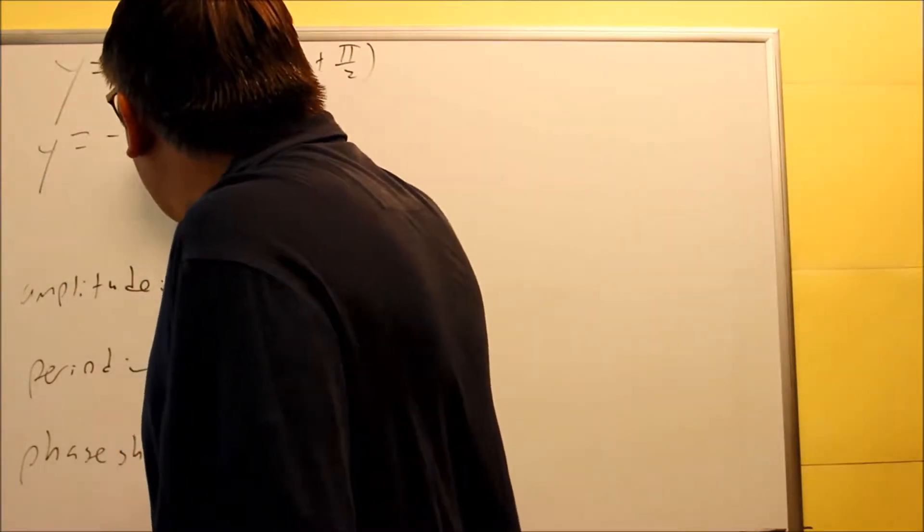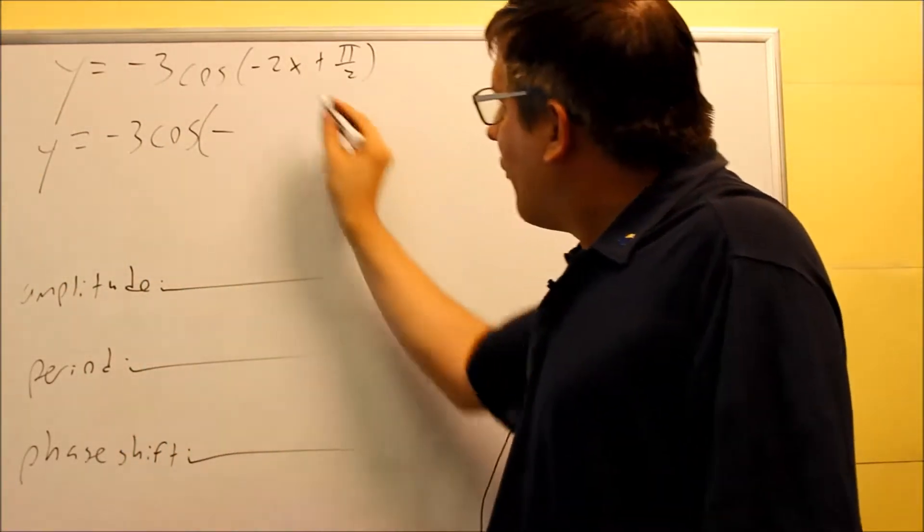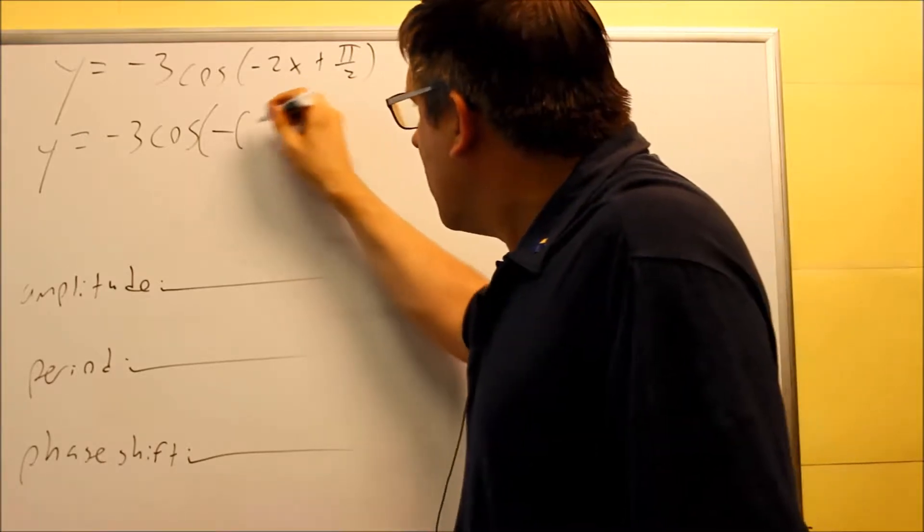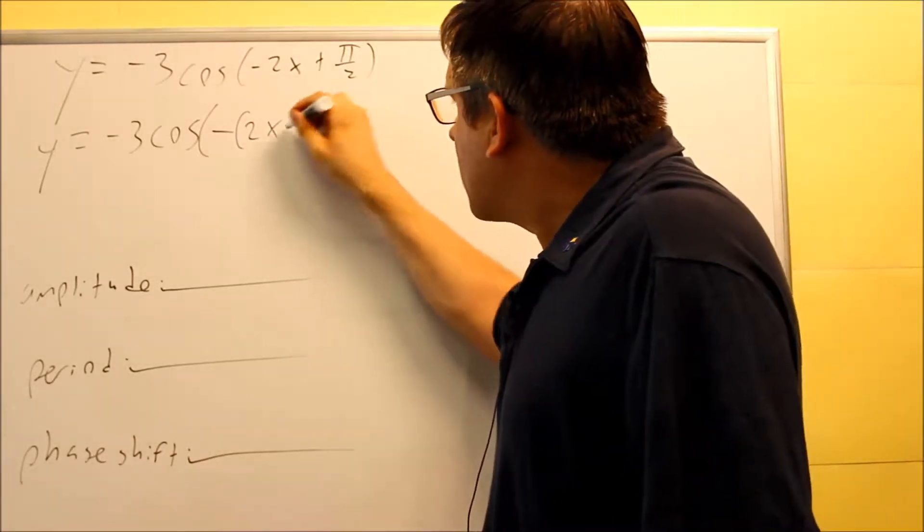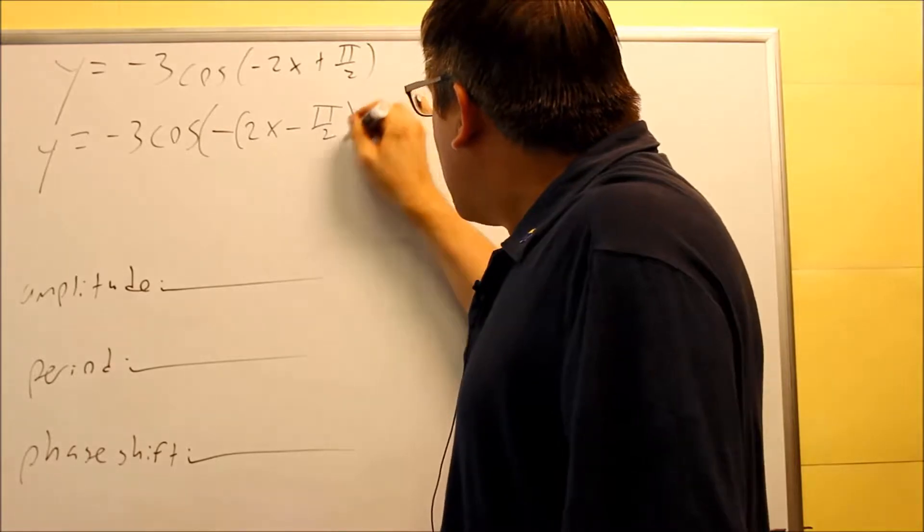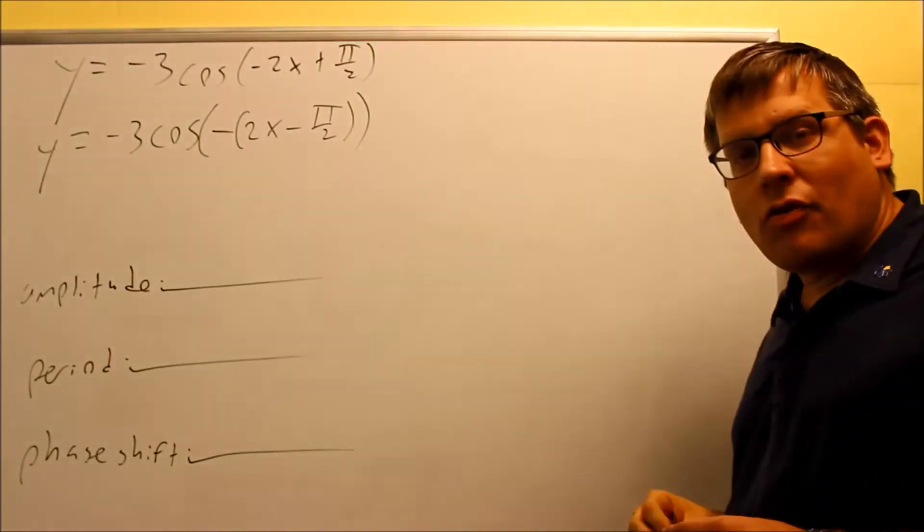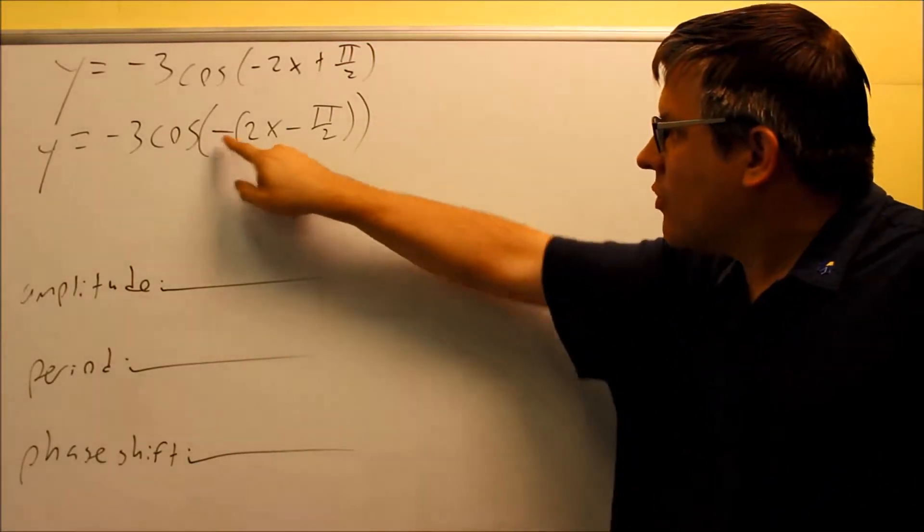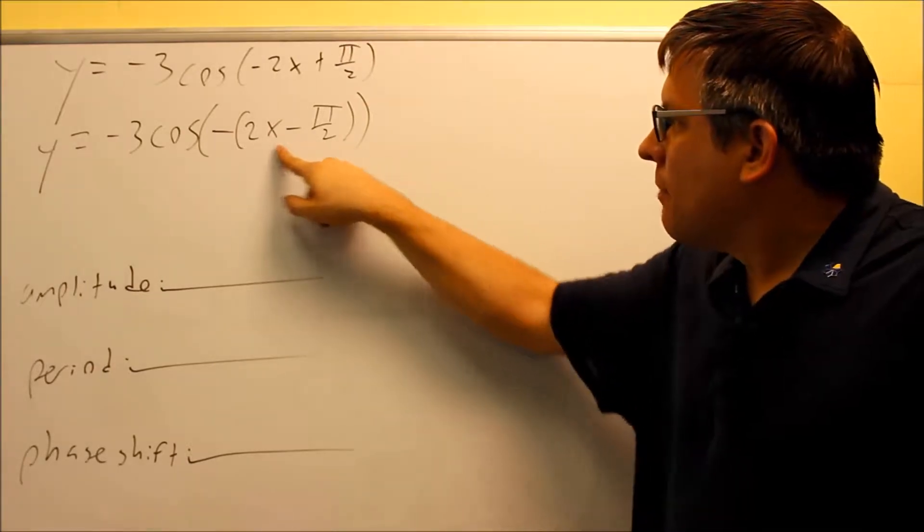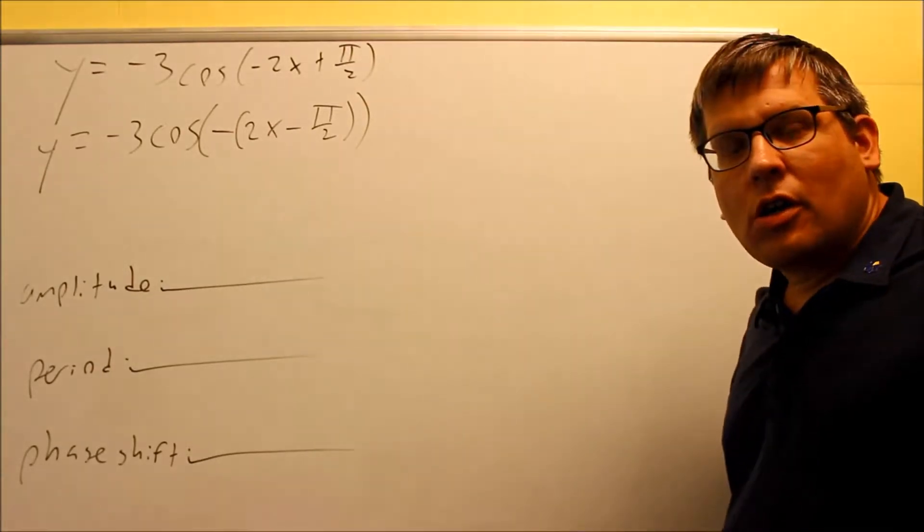So here's what that's going to look like. We're going to have y equals negative 3 cosine. I'm going to pull a negative on the outside, factoring a negative out of each one of these things here. You'll get positive 2x and then minus pi over 2. So that would be the factored version. We're pulling out the negative, so now what's inside the parenthesis part is now going to be positive.